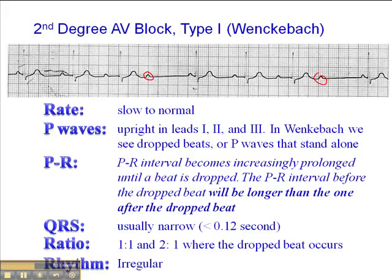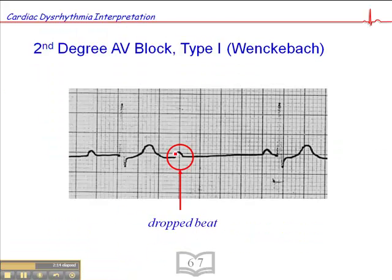When you see a drop beat, look for the PR interval before it — it'll be long compared to the one after it. The reason this happens is that the PR interval gets subtly longer and longer, and then we have a P-wave that doesn't get through the AV node. At the point where the next P-wave comes along, the AV node has had a long time to recover, so it's no longer refractory, hence the shorter PR interval after the drop beat.